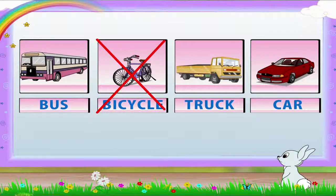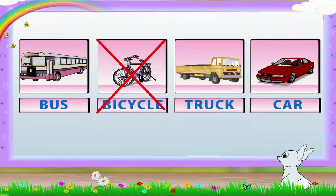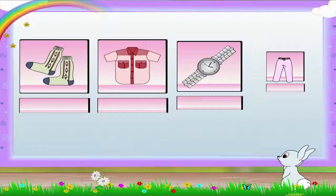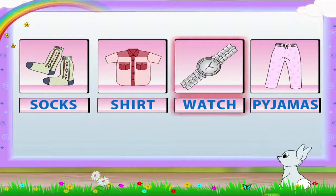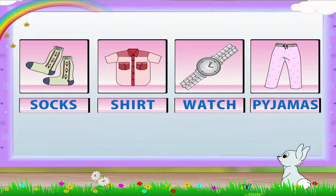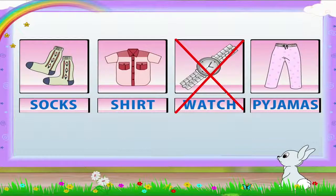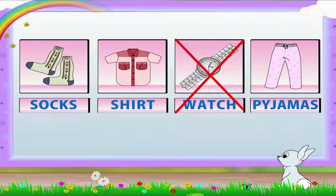Bicycle is the odd one. Bus, truck, and car need fuel. Rainbow, you are smart! Socks, shirt, watch, and pajamas - yes, of course it is the watch! Socks, shirt, and pajamas are made of cloth.